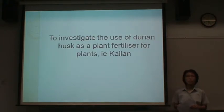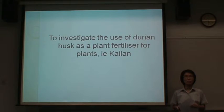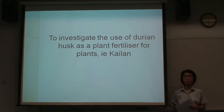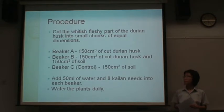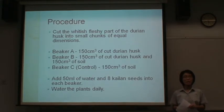I will now move on to the first part of the project, which is to investigate the use of Durian Husk as a plant fertiliser. Kailan was chosen due to its needs for growth. The procedures are as follows: first, cut the fleshy part of the Durian Husk into small chunks of approximately low dimension.